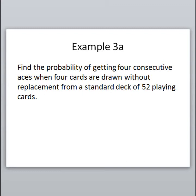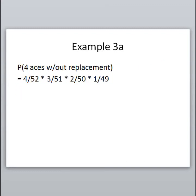Let's say we draw one ace and set it aside. Now there are only three aces left and only 51 cards remaining, so for our second draw we have a 3 out of 51 chance. We draw another ace and set it aside — now two aces left out of 50 cards, giving a 2 out of 50 chance on the third draw. We take that ace away and we're down to one ace left in 49 cards, so the fourth draw is 1 out of 49.